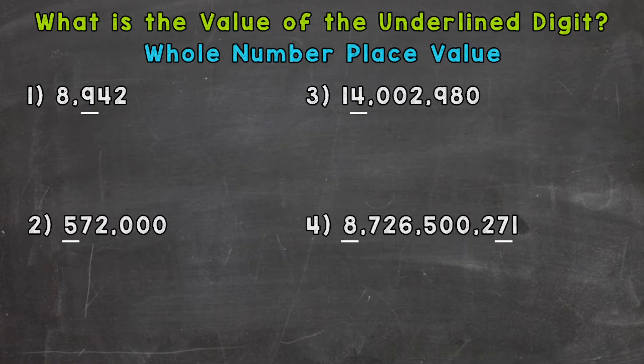So let's jump into number one, where we have 8,942. And the digit that we have underlined is the 9. Now, the value of a digit is going to be how much that digit is worth. So we need to think about how much that 9 is worth. And it's not just worth 9, because it's not sitting in the ones place. We need to determine what place a digit is sitting in first. And that place is going to determine that digit's value. So the 9 is in the hundreds place, therefore its value is 900.